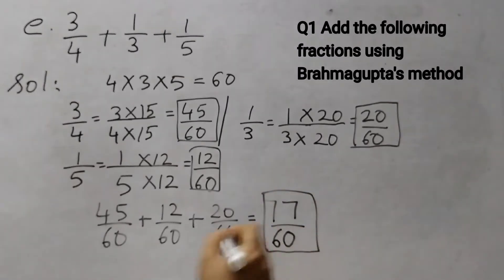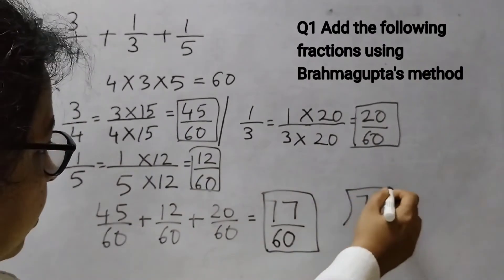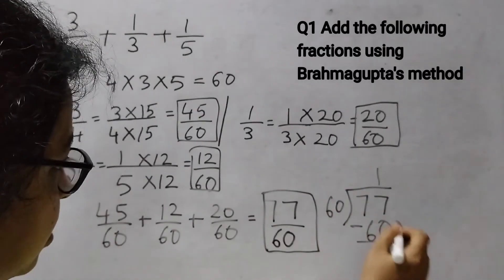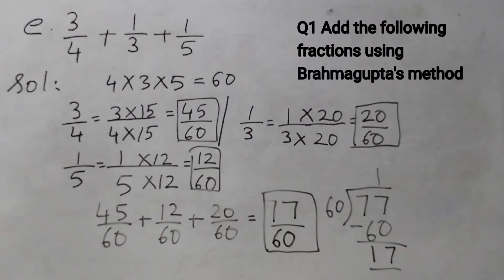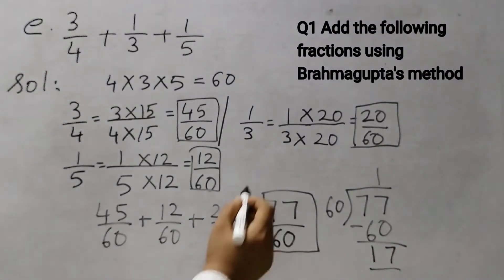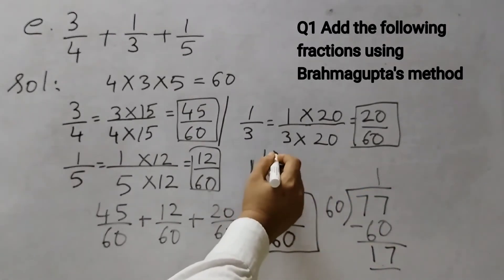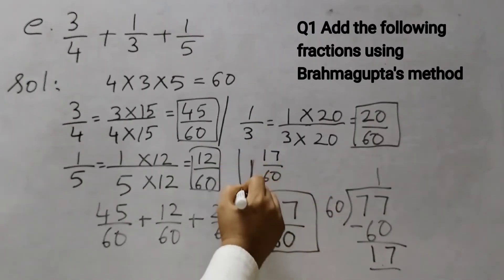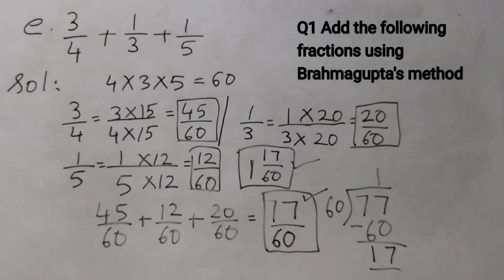This is your answer. If you want, you can convert it to a mixed number. 77 ÷ 60: 60 ones are 60, so the quotient is 1, and the remainder is 17. So we can also write this answer as 1 and 17/60. So this could be your answer, or 77/60.